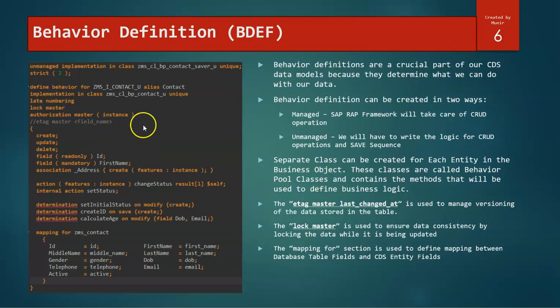As can be seen, we should also go ahead and define a behavior definition for the address entity as well. And that should be defined just below this behavior definition. So behavior definition will be created for the root entity and all the related child entities' behavior definitions should be included in the same file.